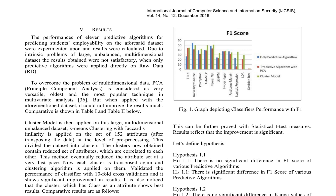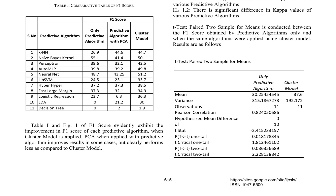To address this, Principal Component Analysis (PCA) was considered as a dimensionality reduction technique, but it did not yield significant improvements. To overcome this challenge, a cluster model was developed, which involved applying k-means clustering with Jaccard similarity to reduce the dataset's dimensionality. This approach significantly improved the results, as evidenced by substantial enhancements in F1 score and kappa values compared to the direct application of predictive algorithms. Statistical t-tests were conducted to validate these improvements, confirming the superiority of the cluster model.